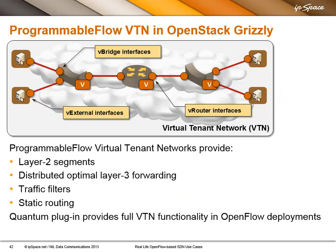What you can do with Programmable Flow, which implements most of those features, is connect Programmable Flow to an OpenStack deployment, and Programmable Flow would control both physical and virtual switches. This is the tenant topology — what you would see from the tenant perspective. You can have multiple bridges, which are Layer 2 segments. You can have a router and connect VMs to individual ports on the bridges. Programmable Flow provides Layer 2 segments, optimal Layer 3 forwarding, static routing, and traffic filters deployable on egress or ingress VM-facing ports.